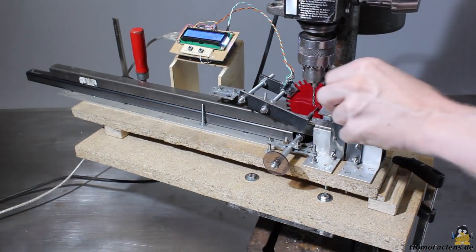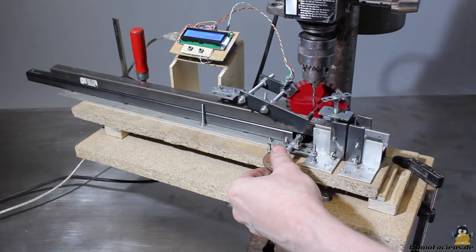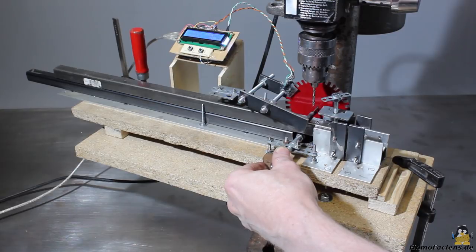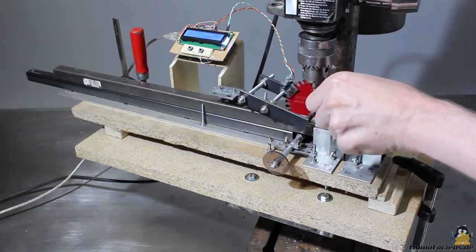The little helper simplifies not only cutting of square tubes, but also the process of drilling holes on given positions. Here the helper is mounted on the table of my drill press with the drill pointing to the center line of the square tube.